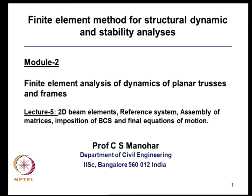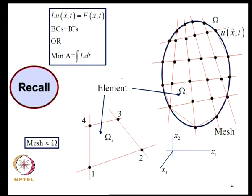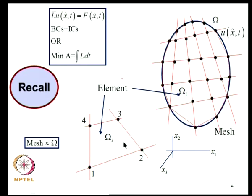We have been talking about the development of the finite element method for analyzing planar structures, so we will continue with the discussion. In the last class we outlined the basic framework for finite element modeling: if omega is a domain of interest, we partition it into a set of subdomains called elements, and the union of these elements approximately equals the domain of interest.